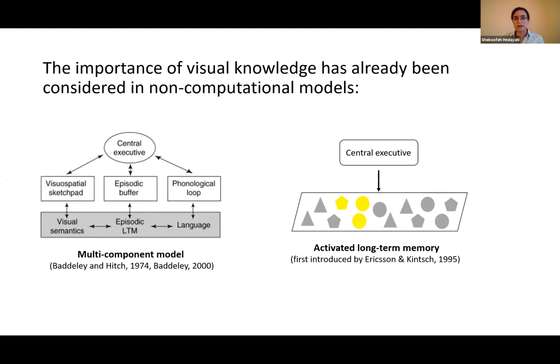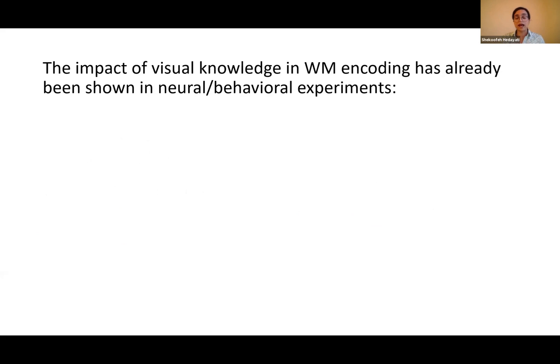The importance of visual knowledge has already been considered in more descriptive non-computational models. For example, the multi-component theory by Baddeley and Hitch had episodic long-term memory and visual semantics as subsystems of working memory. Also, the activated long-term memory theory says that working memory is nothing but an activated part of long-term memory. The importance and impact of visual knowledge in working memory has already been shown in neural and behavioral experiments.